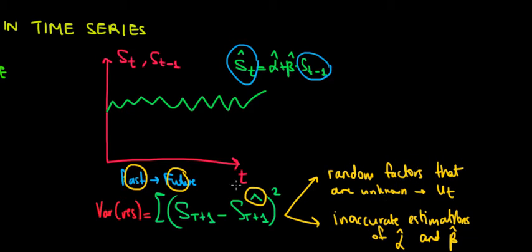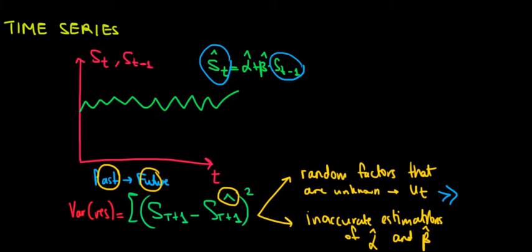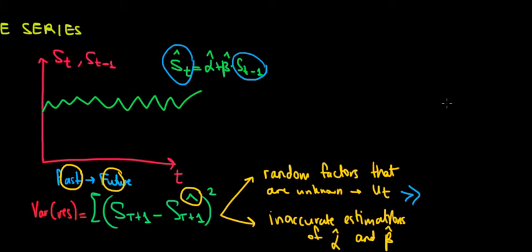So if the variance over here is going to happen mainly because the error term causes it, if this variance is going to be much greater than the variance that's going to happen due to the inaccurate estimators, then what we can say is that the variance of the residuals is going to represent the variance of the error terms in the model.